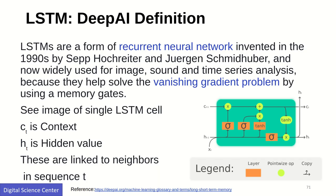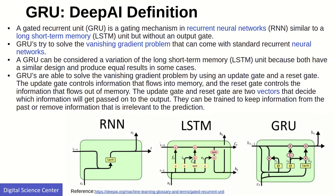LSTM is a variation of RNN. Both RNN and LSTM are used for time series analysis. For example, in a speech signal, there's a relationship between words spoken before and words spoken next. To predict what comes next in a sentence, you need information from the previous state. LSTM was specifically designed to address the gradient vanishing problem, similar to how dropout is used in other networks — making it highly useful for time series data analysis.